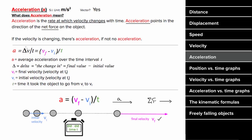The formula for acceleration is the change in velocity over the time it took for that velocity to change. Since delta means final minus initial, you can write this as the final velocity minus the initial velocity over the time. The units of acceleration are meters per second squared, since acceleration tells you how many meters per second the velocity is changing per second. Acceleration is a vector, which means it can be negative if the acceleration points left or down.